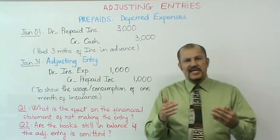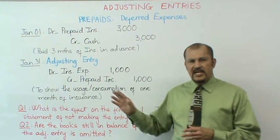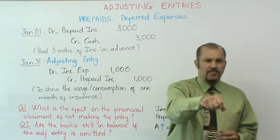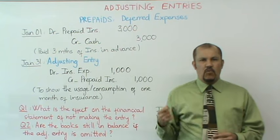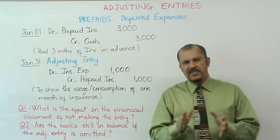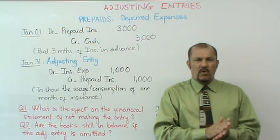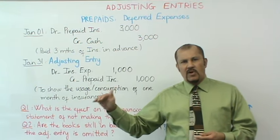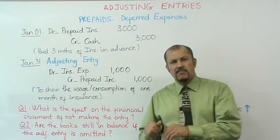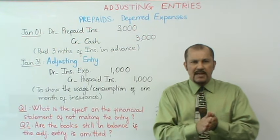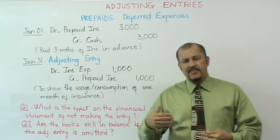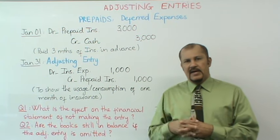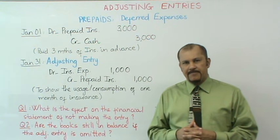Here's another analogy to help reinforce this concept. Assume you have a bucket of water and you take a cup, put it into the bucket, and take out one cup of water to wash your hands. Two things happen simultaneously: you used up one cup of water to wash your hands, and the level of water in the bucket dropped by one cup. That's exactly what happens with your prepaid insurance and your insurance expense in the adjusting entry.